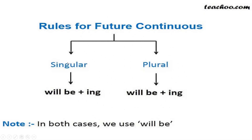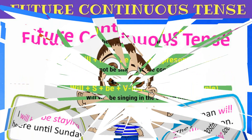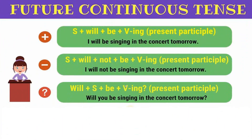Rules for future continuous tense: for both singular and plural, we use 'will be' plus verb plus '-ing.' So what happens in both cases — we use 'will be' only. The form is: will be plus verb plus '-ing.' Example: 'I will be staying here until Sunday.' Similarly: 'The postman will be coming soon.' Continuous itself means you put '-ing' on the verb.